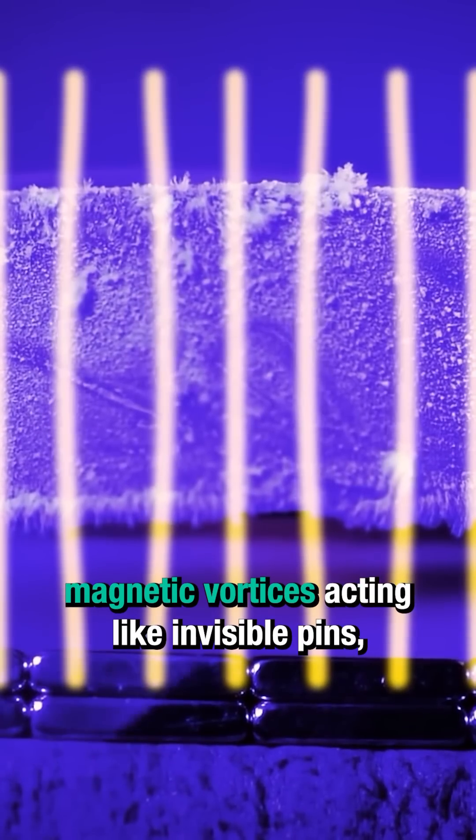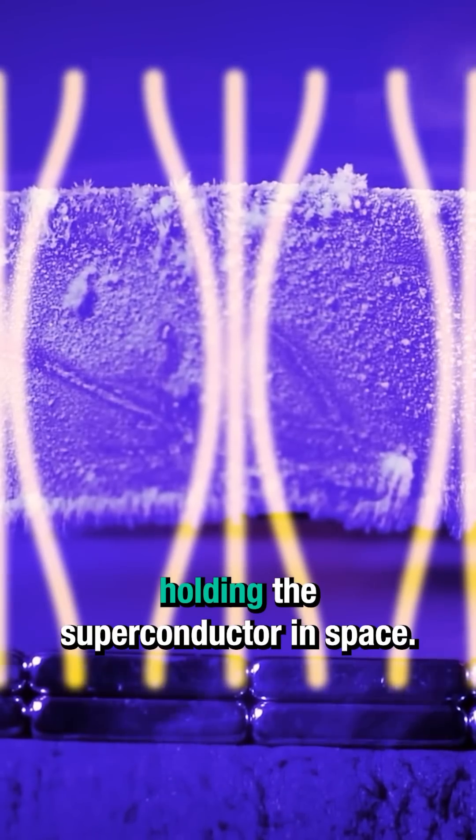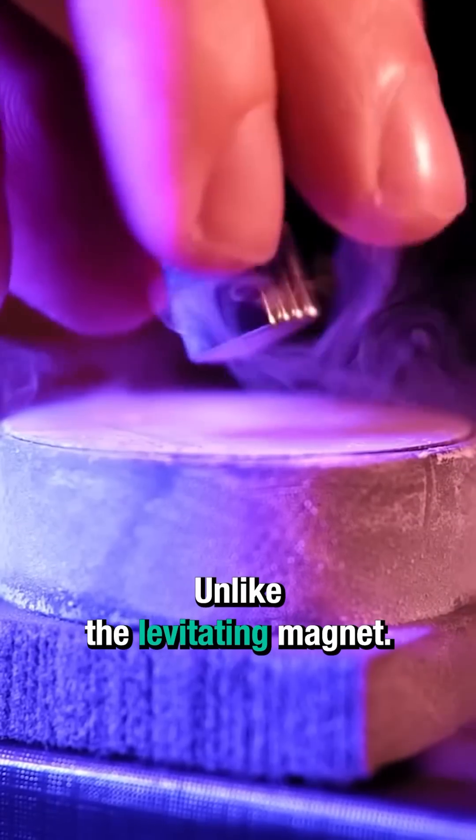Now we have magnetic vortices acting like invisible pins, holding the superconductor in space, unlike the levitating magnet.